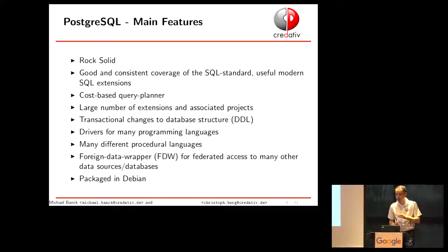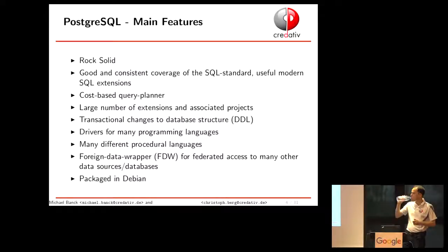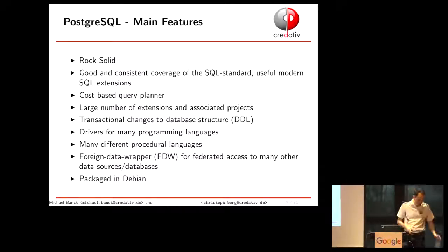There are also lots of foreign data wrappers for federated access to other databases or Postgres itself. You can designate a foreign server with its tables and then query them locally. This can be an Oracle database, a MySQL database, or whatever — you can even run write queries on it. It's getting better and better, and people are starting to build sharding and similar projects on top of it. And of course, it's packaged in Debian.